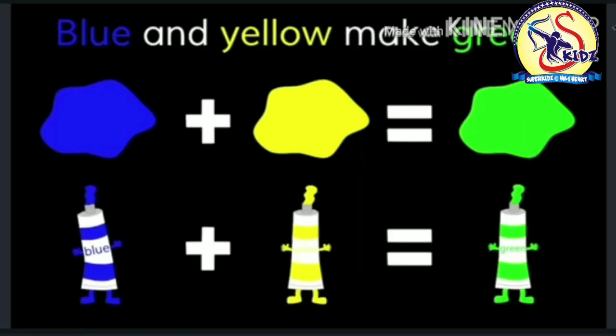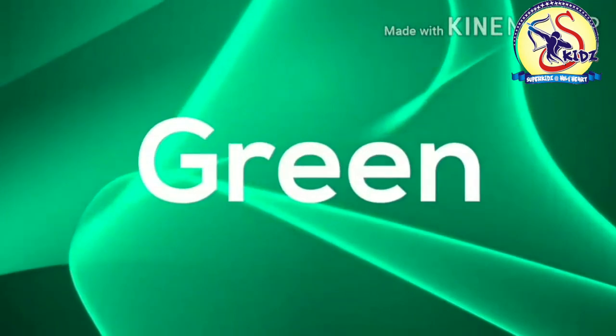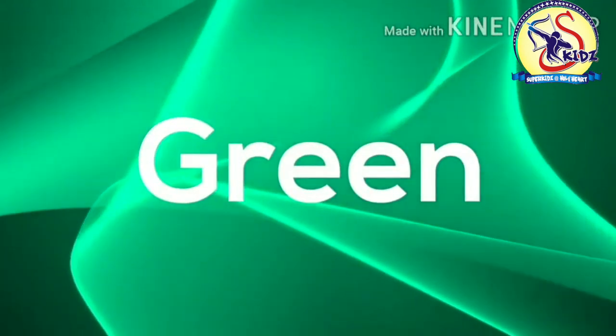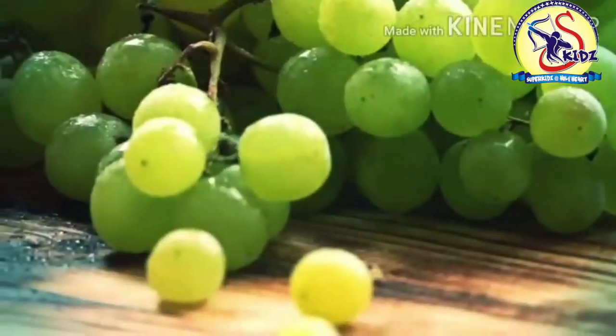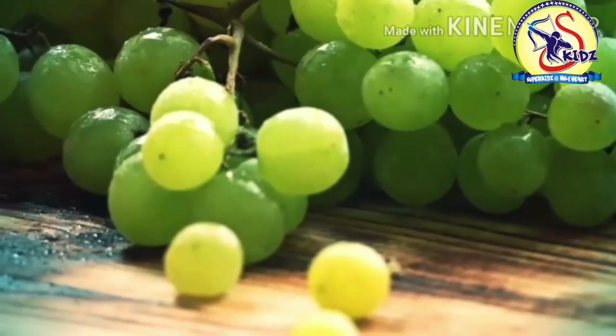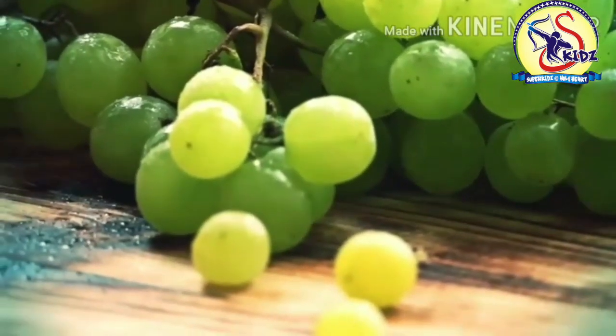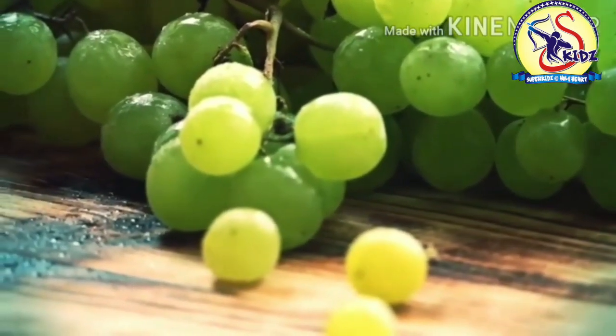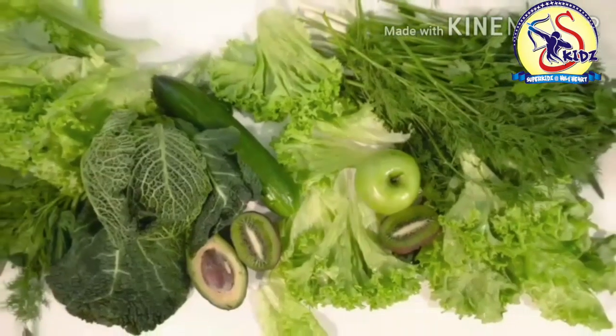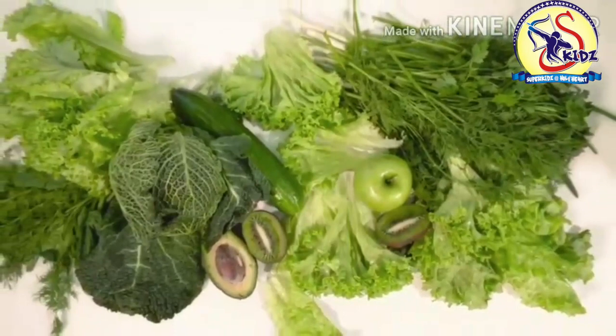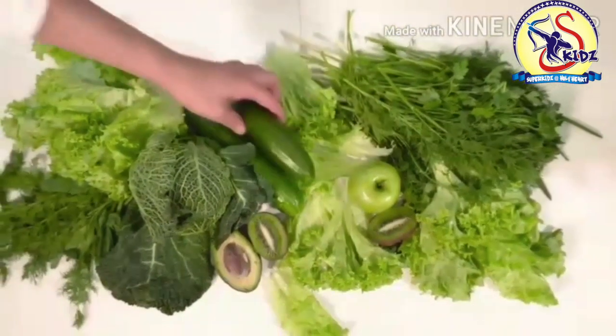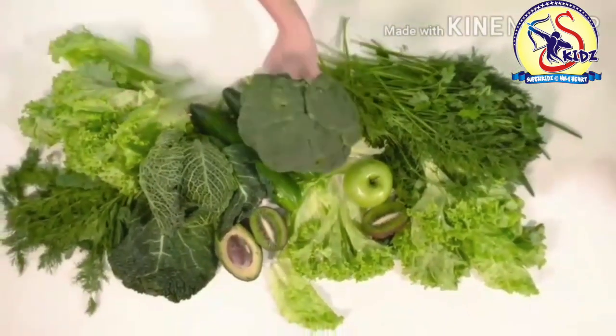Let's see some green color things. This is green grass. These are green grapes. Many vegetables are green.